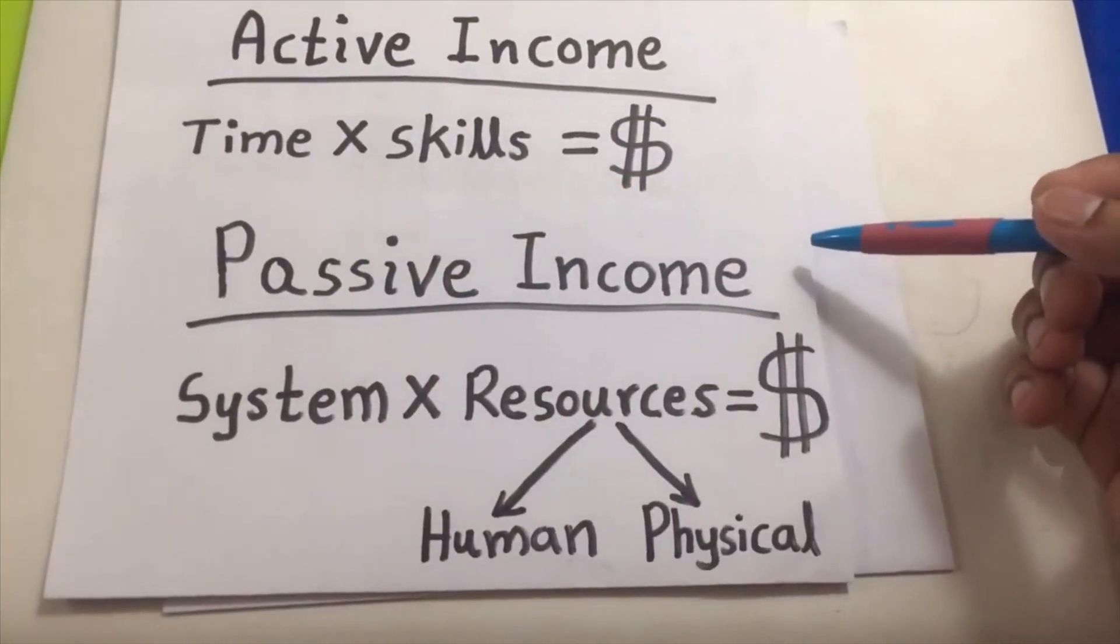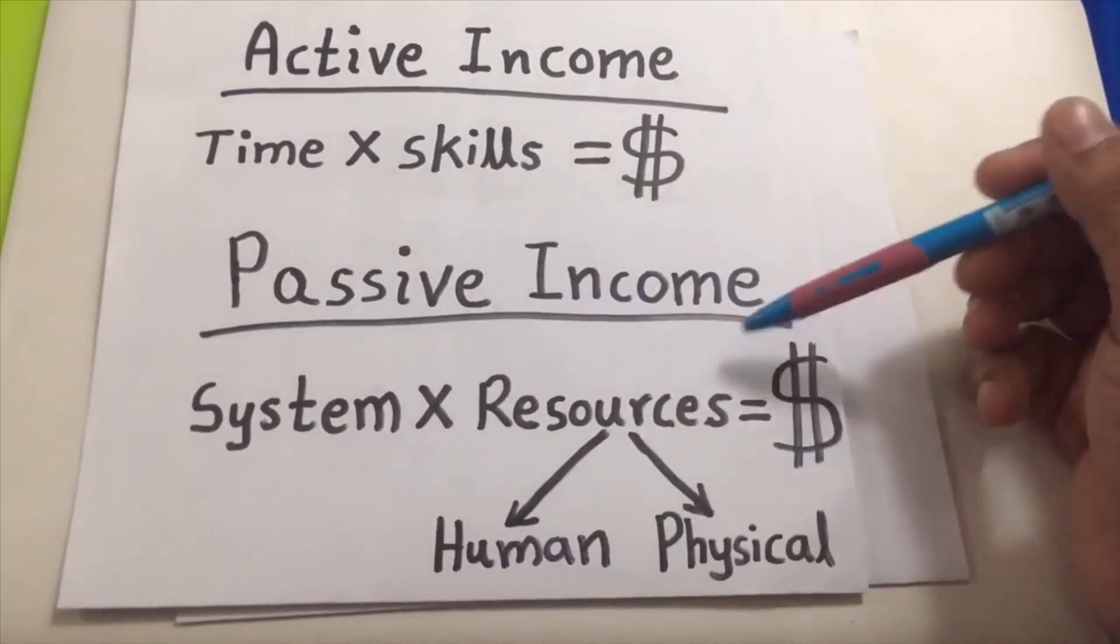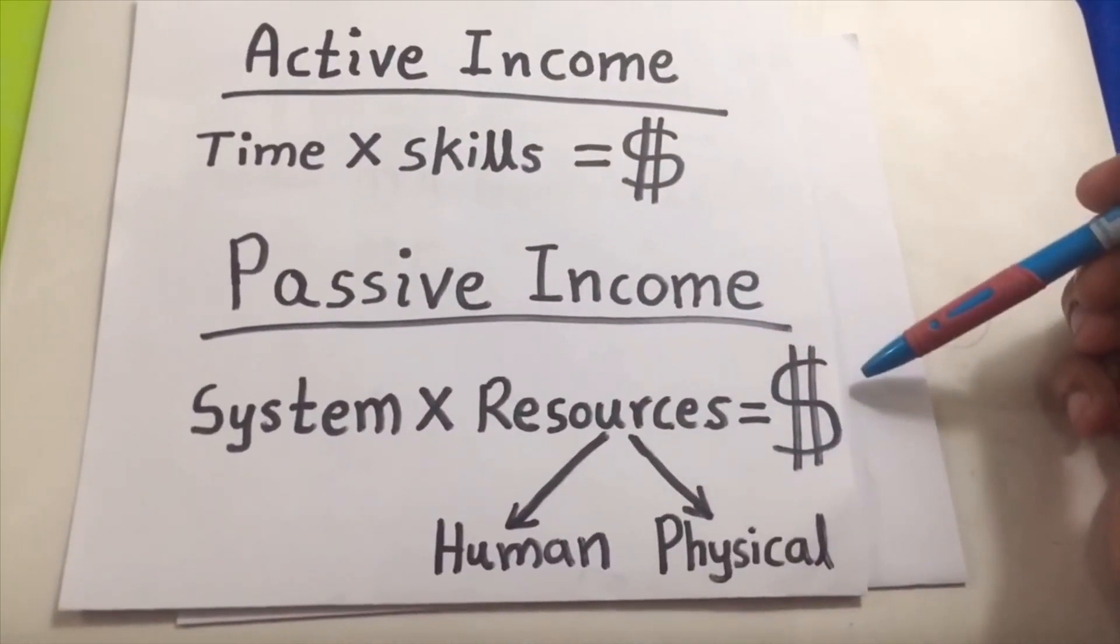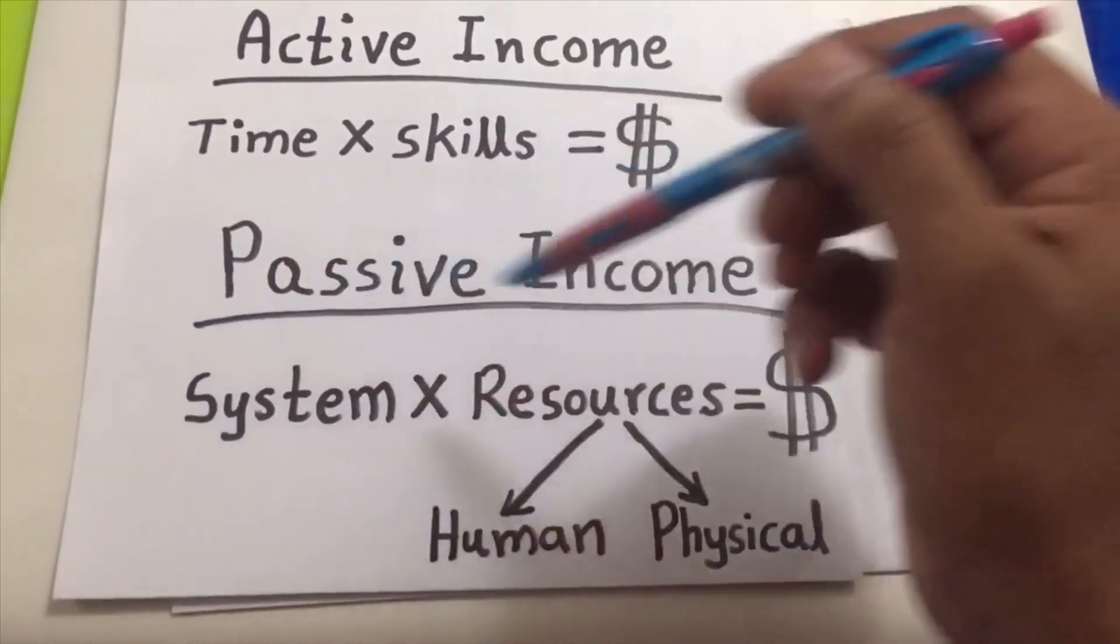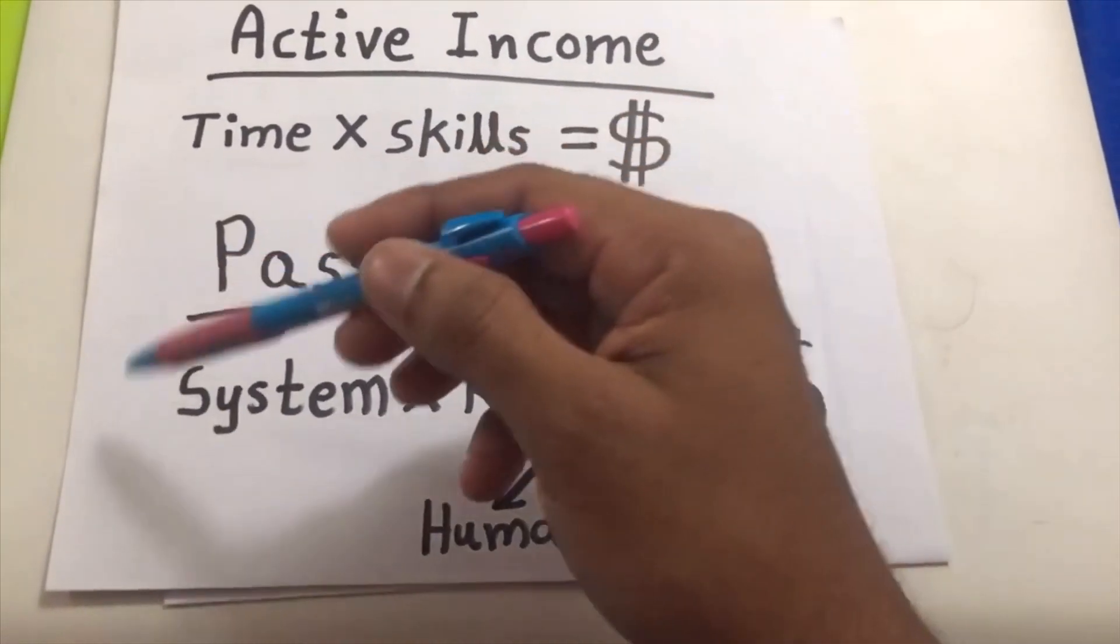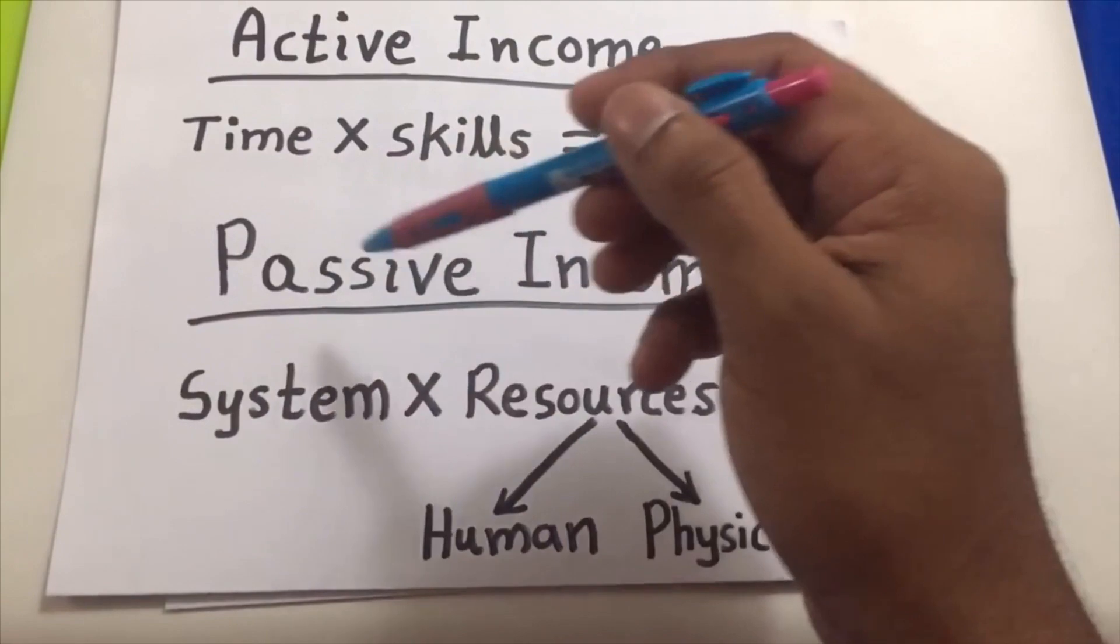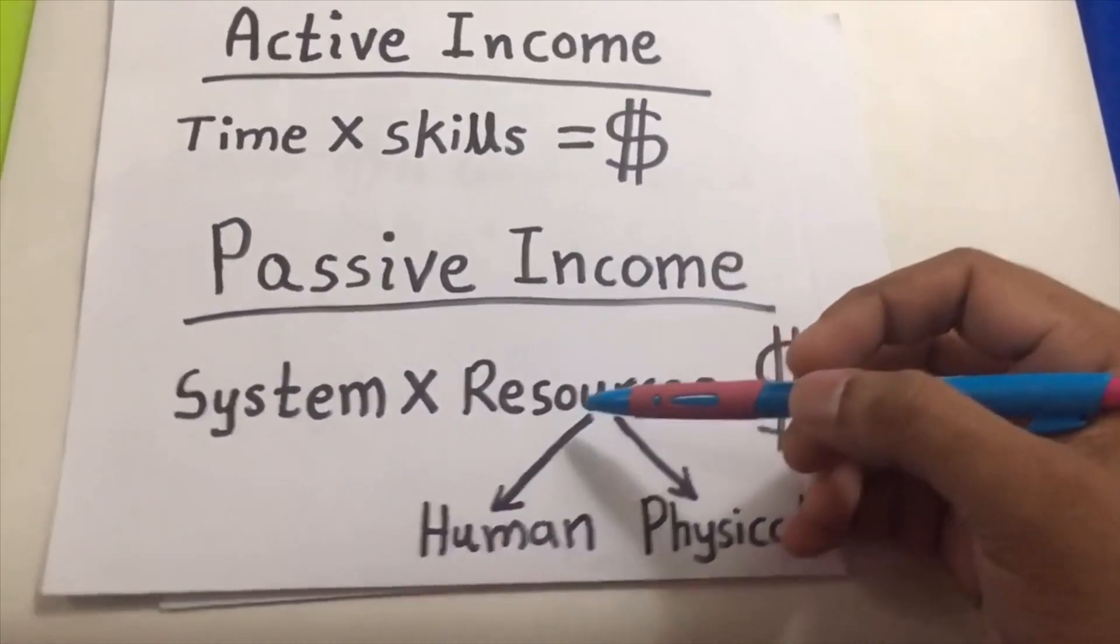So what is a passive income? A passive income is an income where you can earn a huge amount of money by a system working for you. There are resources working on the system so that you are getting a huge amount of money. This system runs even when you are there or not. The resources are human and physical.